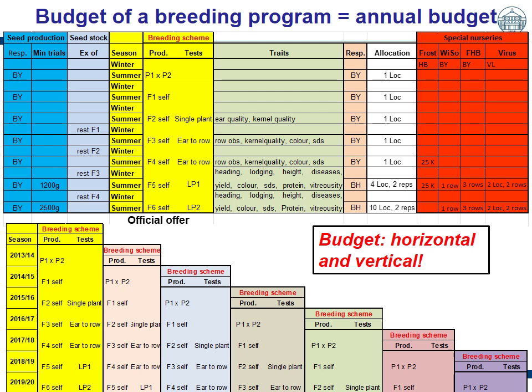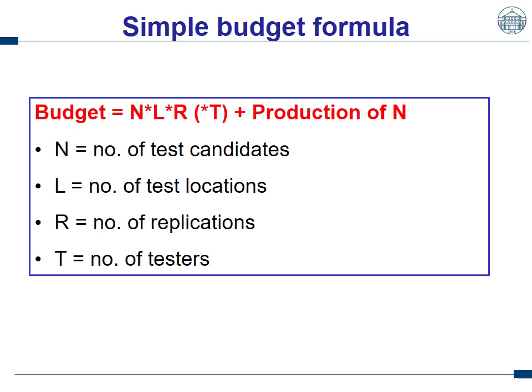Just to keep this in mind when we design our breeding scheme to run an optimization. We could derive a very simple budget formula: the cost for producing the lines plus the cost for testing the lines, with the number of lines, the number of locations, replications, and in hybrid breeding also hybrid testers.